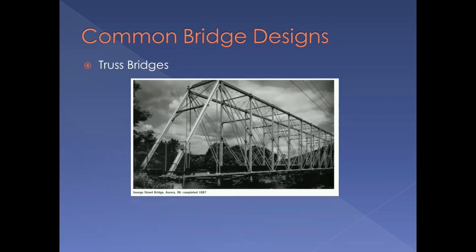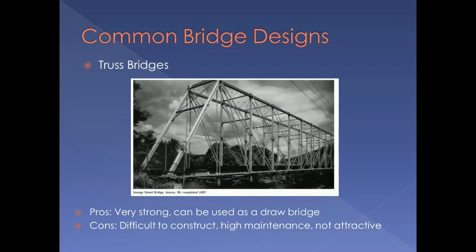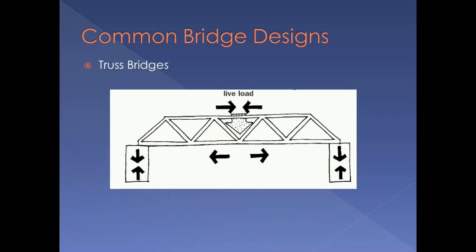Now let's look at truss bridges. This is the George Street Bridge in Aurora, Indiana. Truss bridges are very strong — so strong in fact that they can be used as draw bridges. However, they are difficult to construct, require high maintenance, and are not considered to be attractive. Here we see how the loads and forces are distributed on a truss bridge.